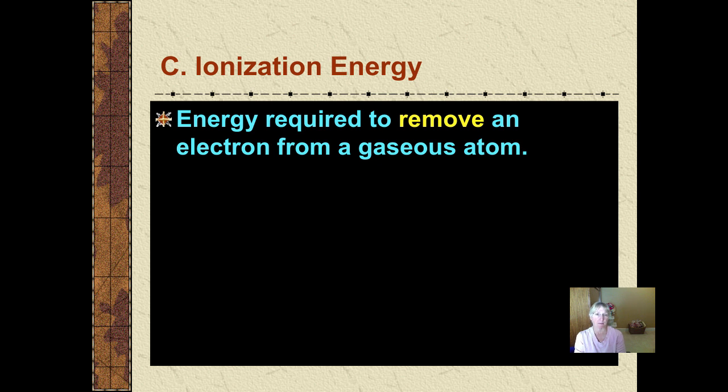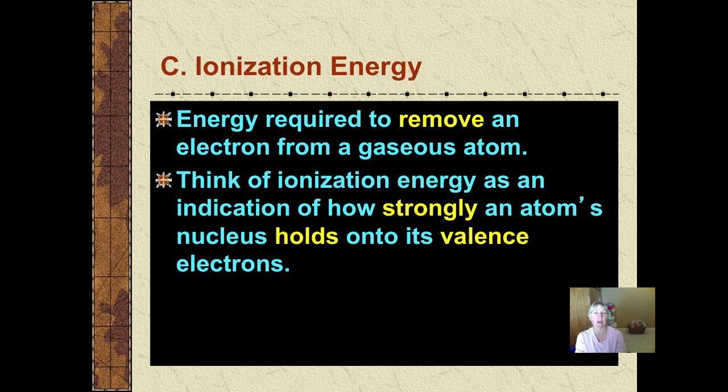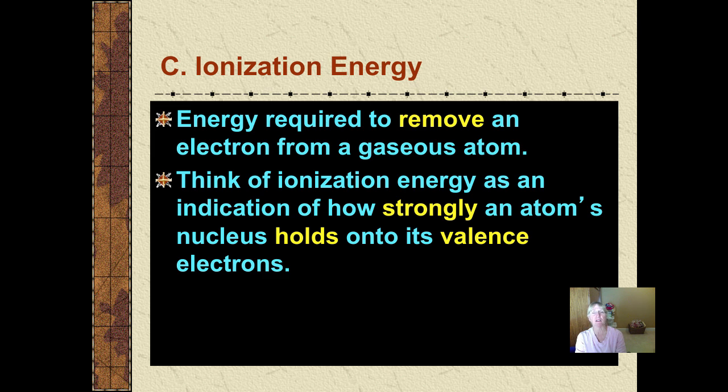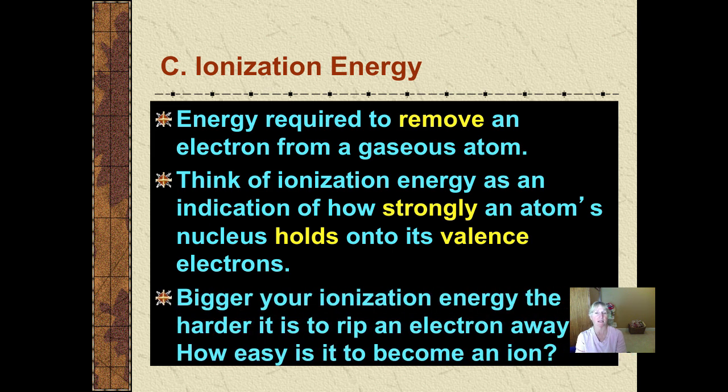This last concept for tonight's vodcast is one of the more difficult ones, and it's called ionization energy. Chemists have measured the amount of energy required, not to move necessarily a single electron from an atom in its gaseous state, but a mole of electrons. Regardless, you can think of ionization energy as how strongly an atom's nucleus holds on to its valence electrons. If you have a low ionization energy, it's easy to remove electrons. If it's high, it's difficult.